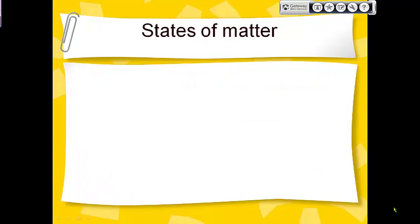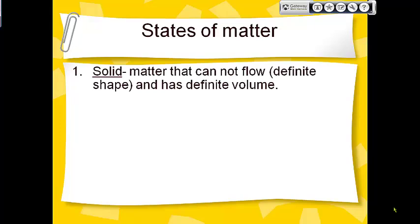Let's talk about the states of matter. Matter can be a solid. If it's a solid, it has a definite volume and a definite shape. Definite shape means you can't easily change its shape without breaking or destroying it. Definite volume means you can't really change the amount of space it takes up. Solids cannot flow, and they have definite volumes and definite shapes.